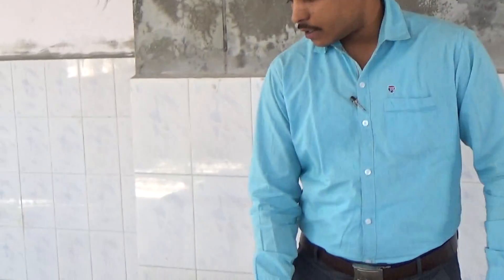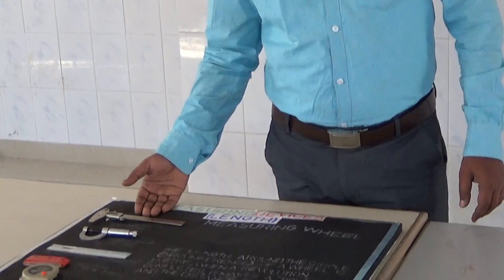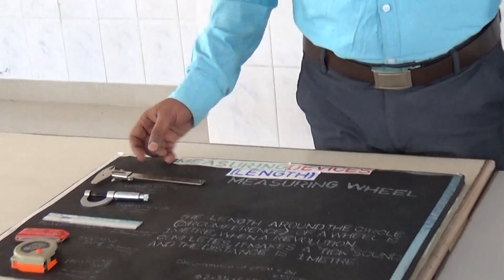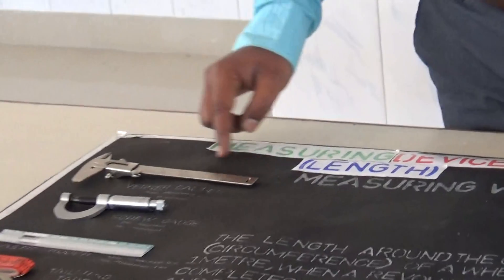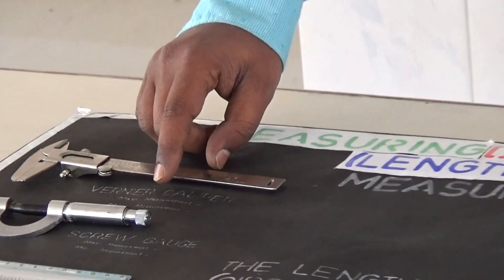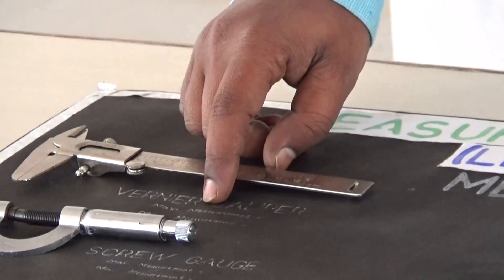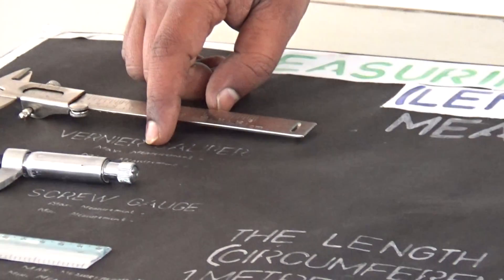Apart from that, if you see some other measuring devices, there are Vernier calipers. This is Vernier calipers — the minimum measurement is 0.1 mm.